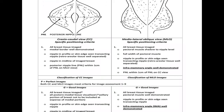For an optimal cranio-caudal view: all breast tissue should be imaged, the medial border well demonstrated, nipple in profile or skin seen transecting the nipple, nipple in midline, and posterior nipple line within one centimeter of the posterior nipple line on MLO view. For an optimal MLO view: all breast tissue imaged, pectoral muscle shadow to nipple level, full width of the pectoral muscle visible, nipple in profile, inframammary angle well demonstrated, and posterior nipple line within one centimeter of that on cranio-caudal view. If these factors are present, we label the views as adequate.